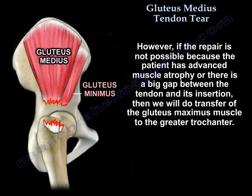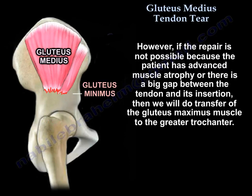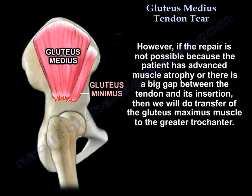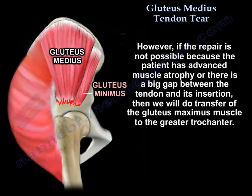However, if the repair is not possible because the patient has advanced muscle atrophy or there is a big gap between the tendon and its insertion, then we will do transfer of the gluteus maximus muscle to the greater trochanter.